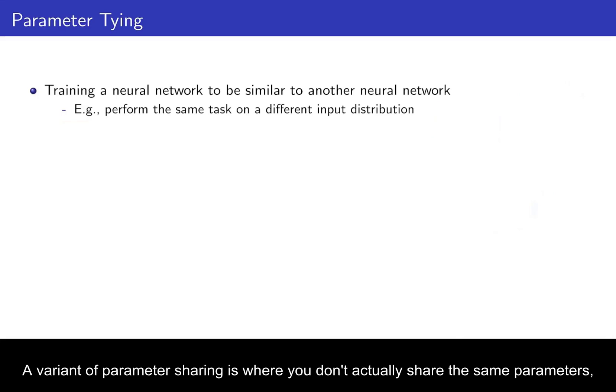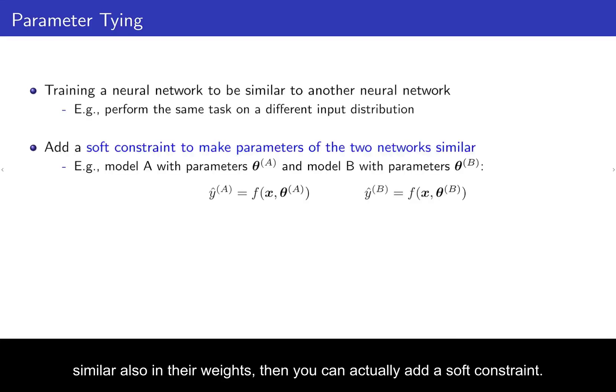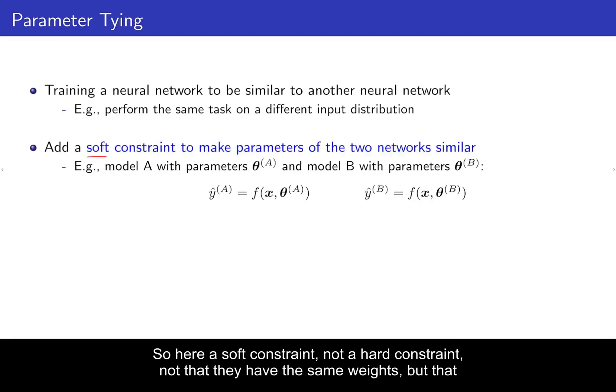A variant of parameter sharing is where you don't actually share the same parameters, but where you actually just encourage weights to be similar to each other. So for example, you can train a neural network to be similar to another neural network. And for example, if you have two different tasks or the same task on a different input distribution, and you expect that the network should actually be quite similar also in their weights, then you can actually add a soft constraint. So here a soft constraint, not a hard constraint. And not that they have the same weights, but that they have similar weights.